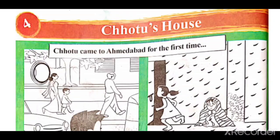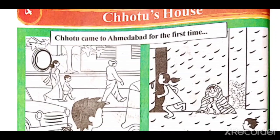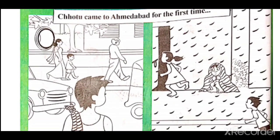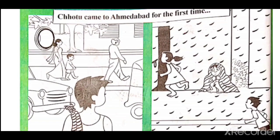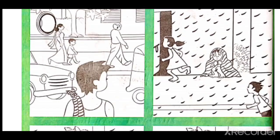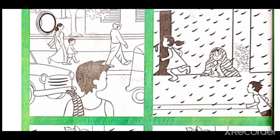Here we can see some images of Chotu's house. Chotu came to Ahmedabad for the first time. In this story, the main character is Chotu, and he has come to Ahmedabad for the first time. Let's decide what all the images are showing.